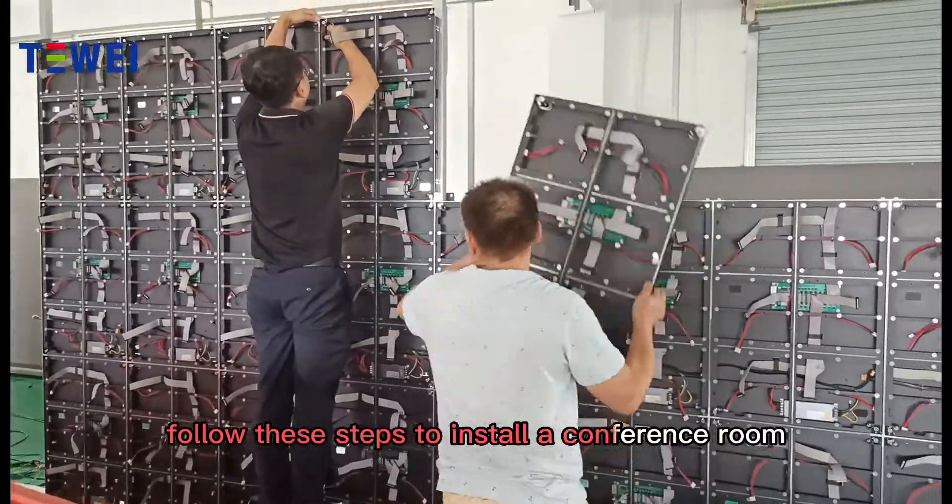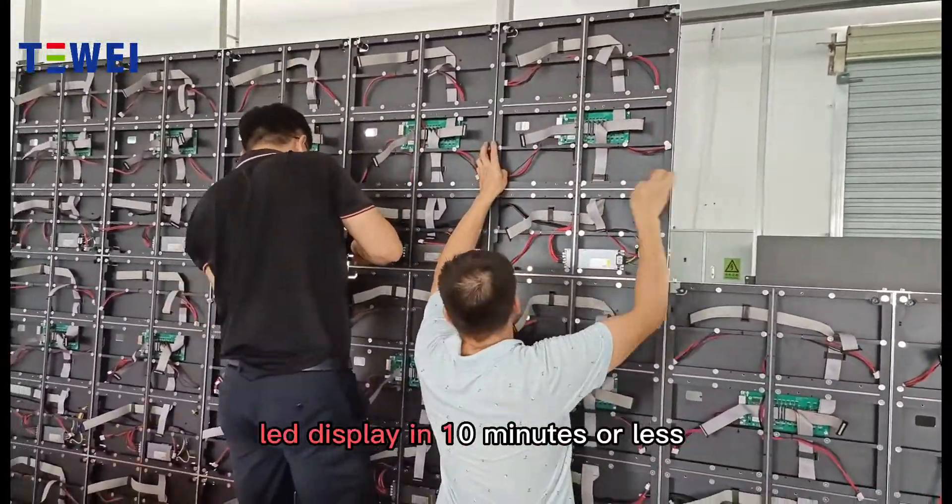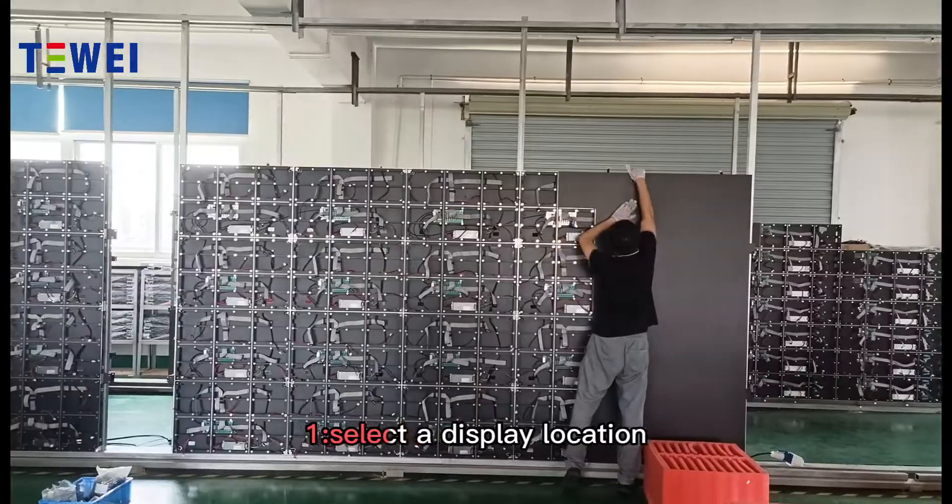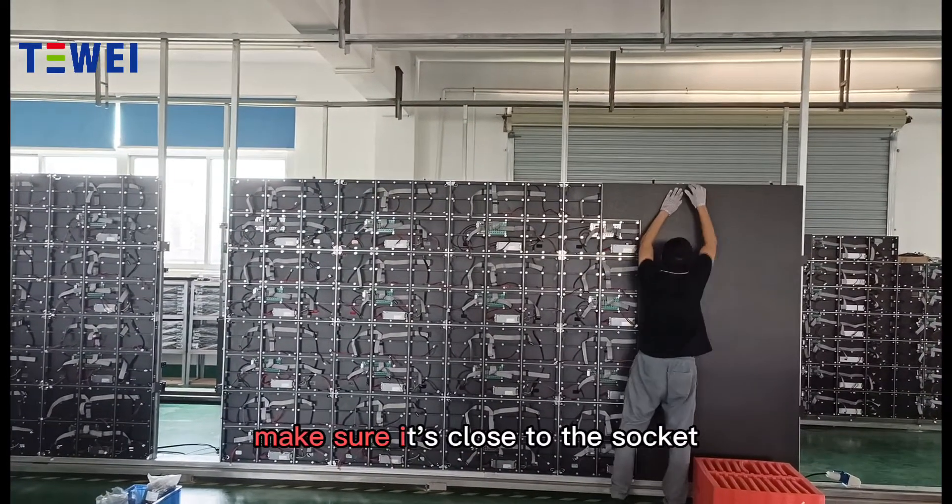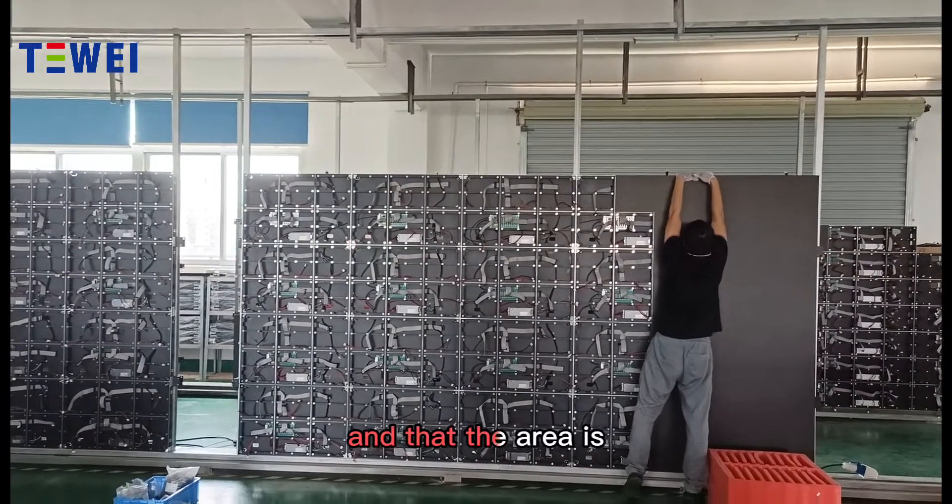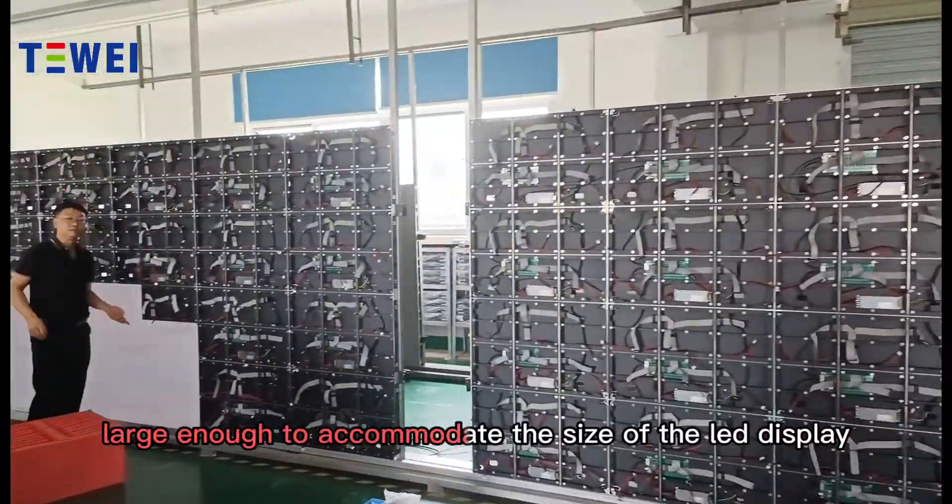Follow these steps to install a conference room LED display in 10 minutes or less. Step 1: Select a display location. Make sure it's close to the socket and that the area is large enough to accommodate the size of the LED display.